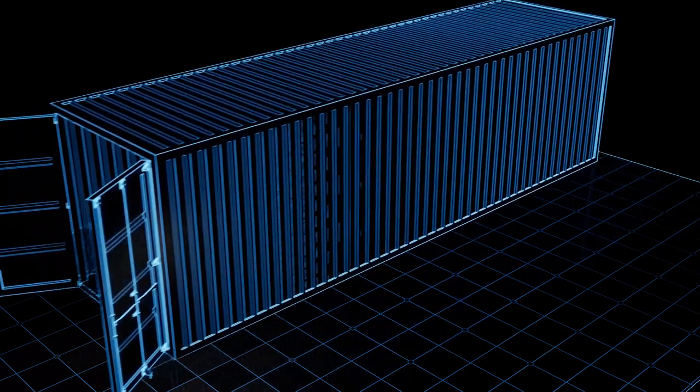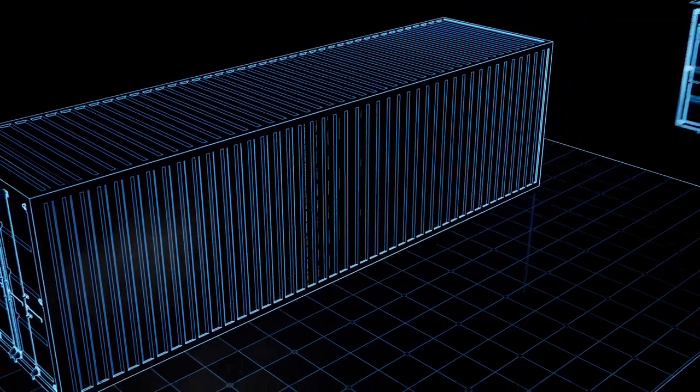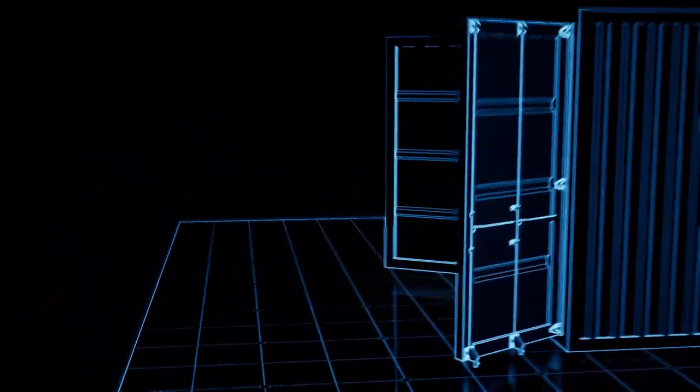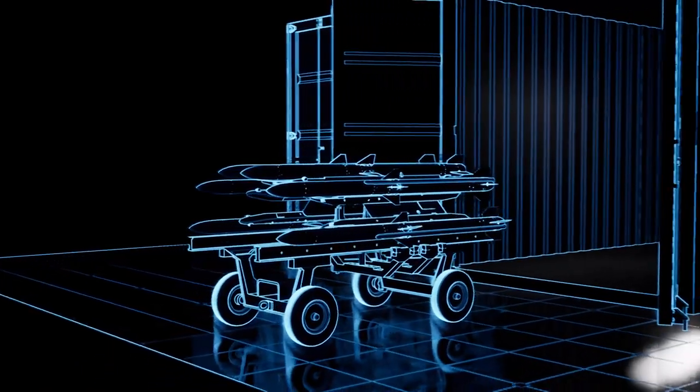Ultimately, the rocket factory in a box can be integrated into a missile factory in a box. This eternal quiver will allow for the in-theater production of munitions yielding a constant reliable supply of weapons.